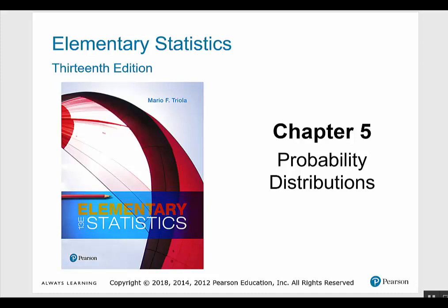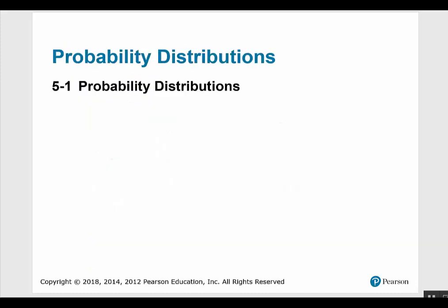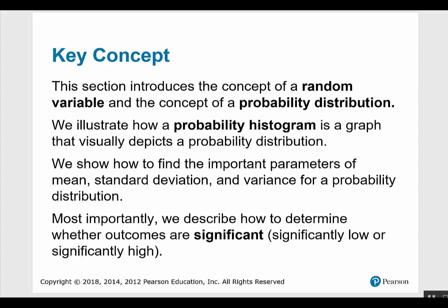Five probability distributions. In this first section, we're going to study probability distributions. The section introduces the concept of a random variable and the concept of a probability distribution. We illustrate how a probability distribution is a graph that visually depicts a probability distribution. We show how to find the important parameters of mean, standard deviation, and variance for a probability distribution, and most importantly, we describe how to determine whether outcomes are significantly low or significantly high.